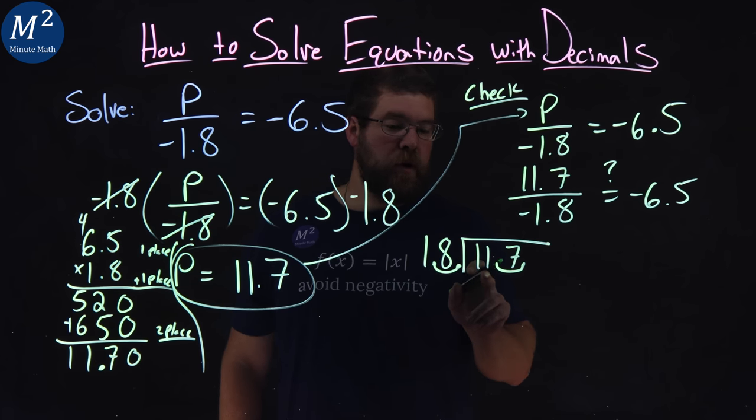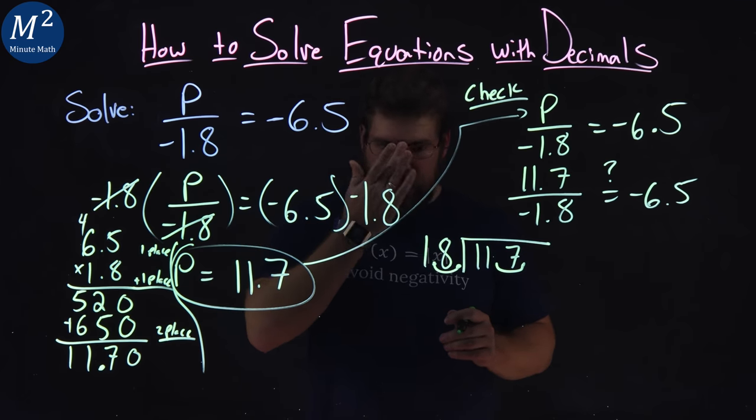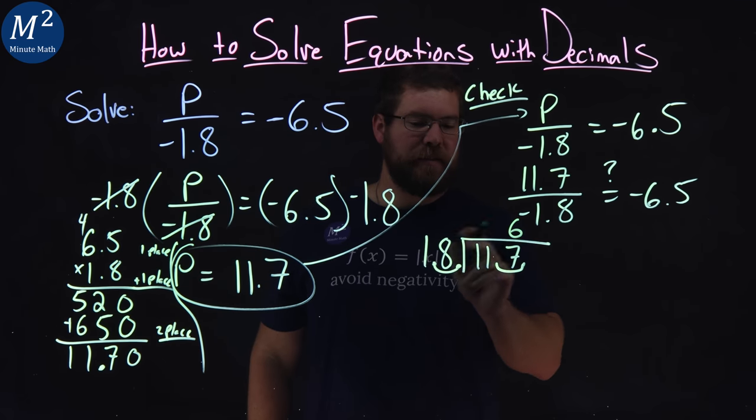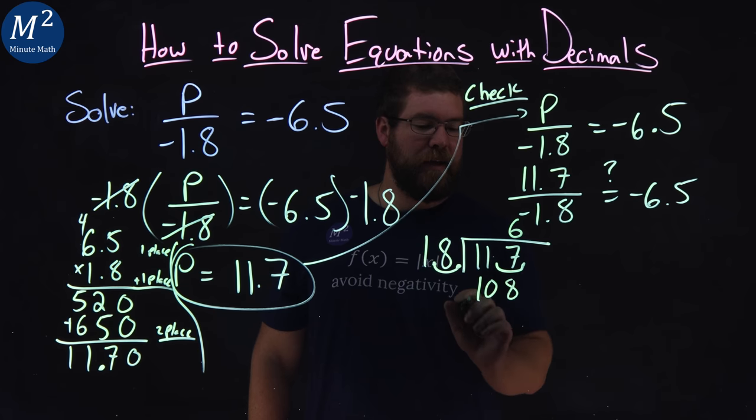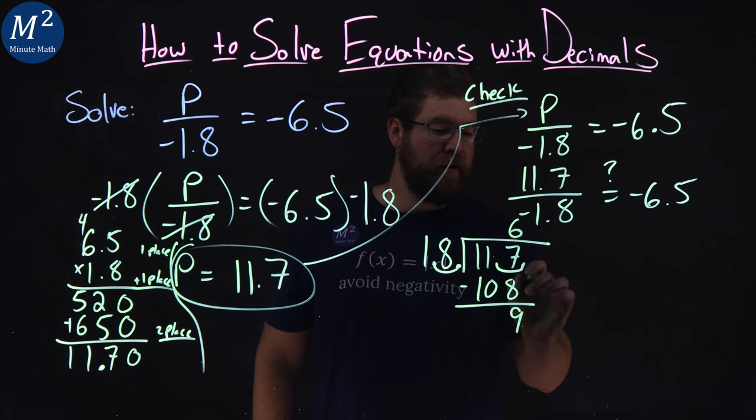18 goes into 11, no. 18 goes into 117. I believe that is 6 times. And 6 times 18 is 108. From there, subtract the two numbers. 117 minus 108 is 9. We have a place value here. A 0. Bring that down.